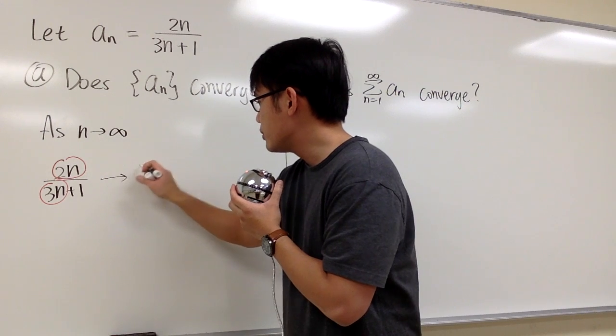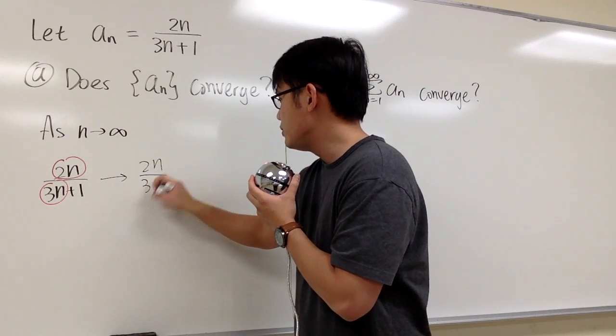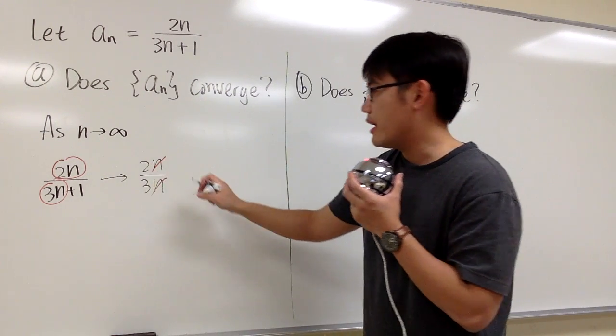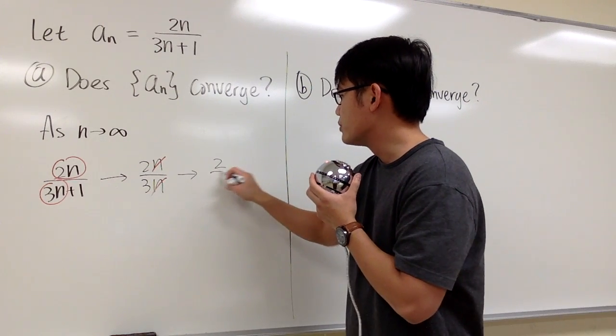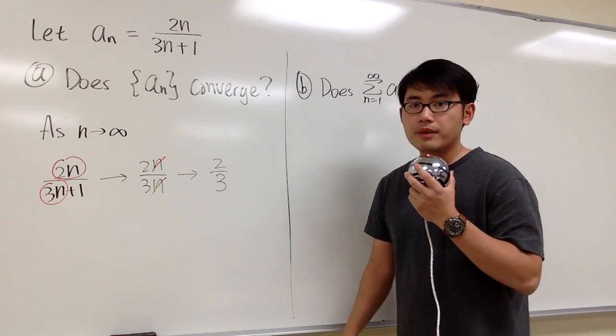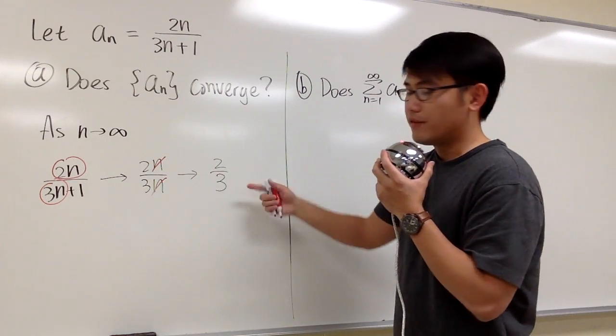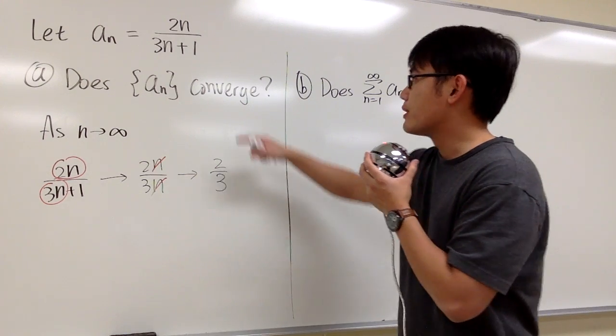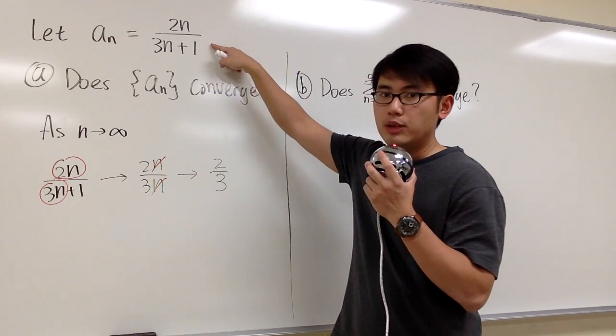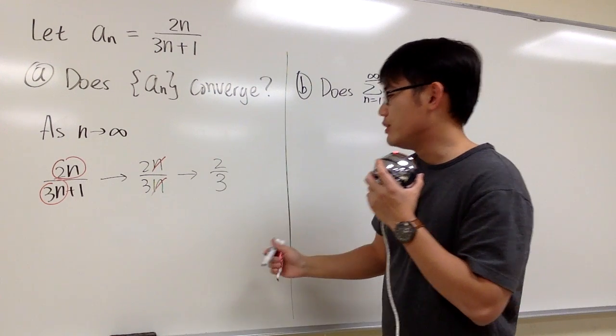This right here will approach 2n over 3n, and then the n can be cancelled, and therefore we know that this approaches 2 over 3. So because 2 over 3 is a finite number, therefore we know that this formula right here,